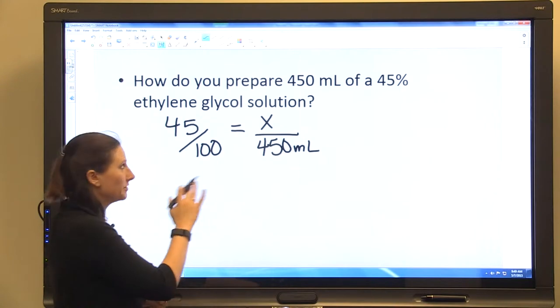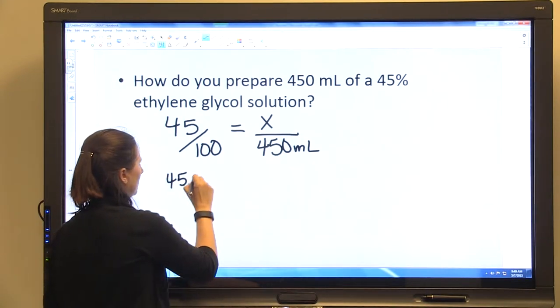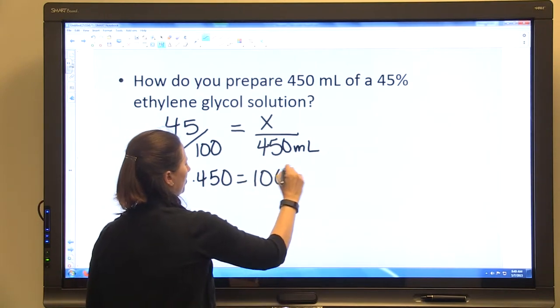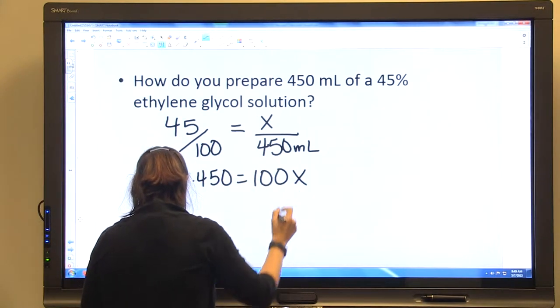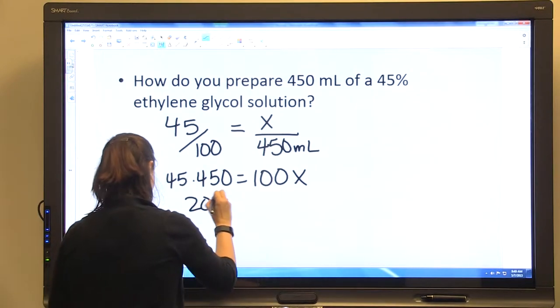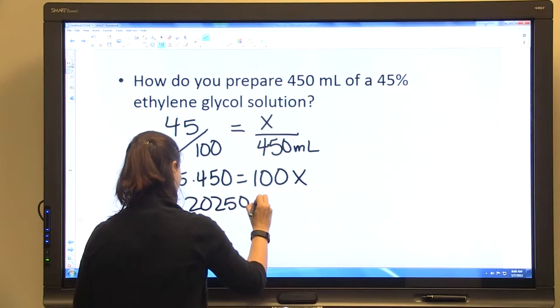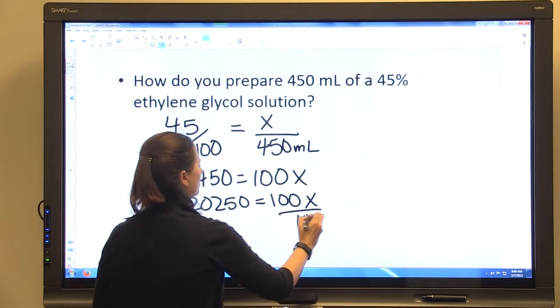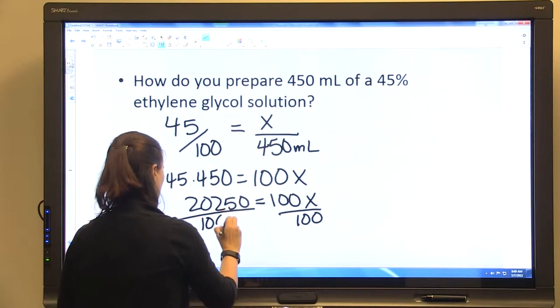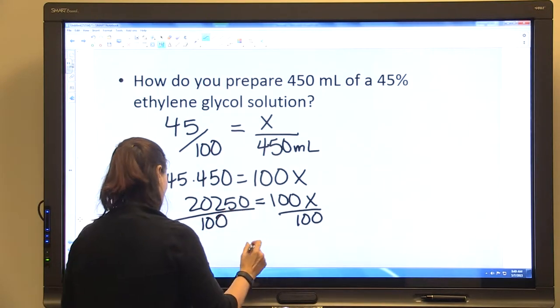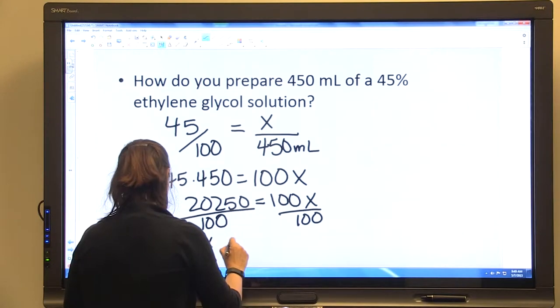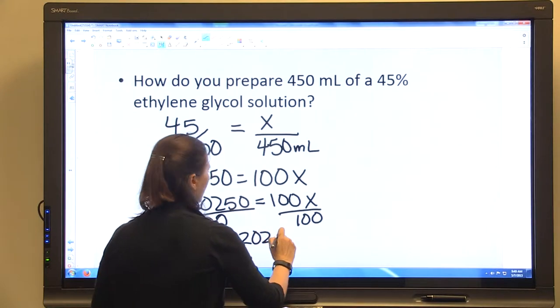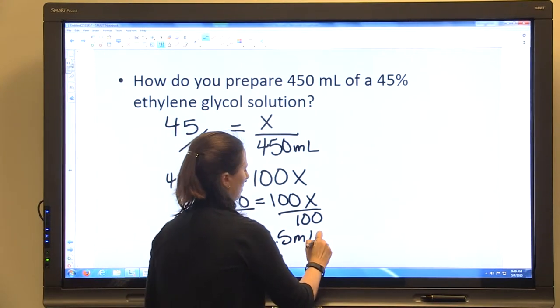And so then we're going to solve this proportion: 45 times 450 equals 100x. Divide both sides by 100 and that's going to leave you with x equal to 202.5 mLs of ethylene glycol.